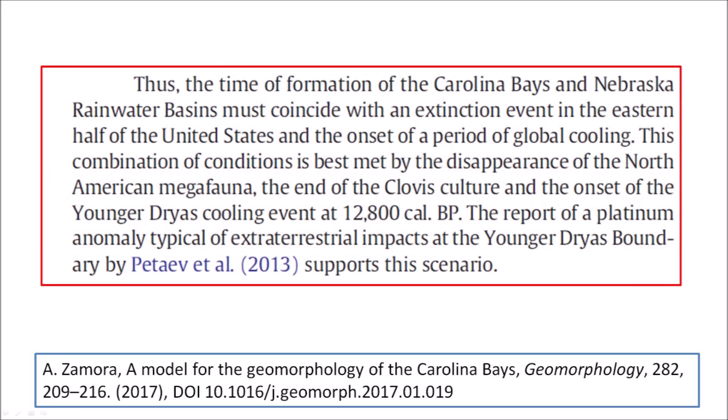Due to the large energy of formation, my paper concludes that the time of formation of the Carolina Bays and Nebraska Rainwater Basins must coincide with an extinction event in the eastern half of the United States and the onset of the period of global cooling. This combination of conditions is best met by the disappearance of the North American megafauna, the end of the Clovis culture, and the onset of the Younger Dryas cooling event at 12,800 calendar years before the present. The report of a platinum anomaly typical of extraterrestrial impacts at the Younger Dryas boundary by Petayev et al., 2013, supports this scenario.